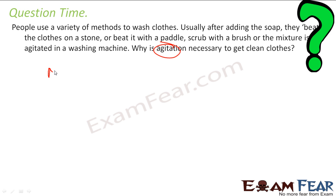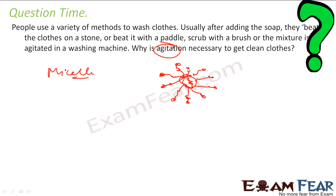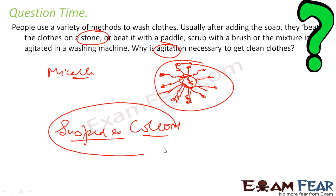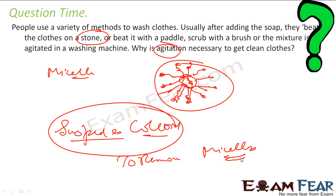Those are soap micelles. The dust is trapped inside the micelles. But the micelles themselves can be trapped inside the cloth. So to kick the micelles out of the cloth, we use a brush or stone, because the micelles are suspended as a colloid in water inside the clothes. To remove these micelles we use a brush, stone, or something similar.